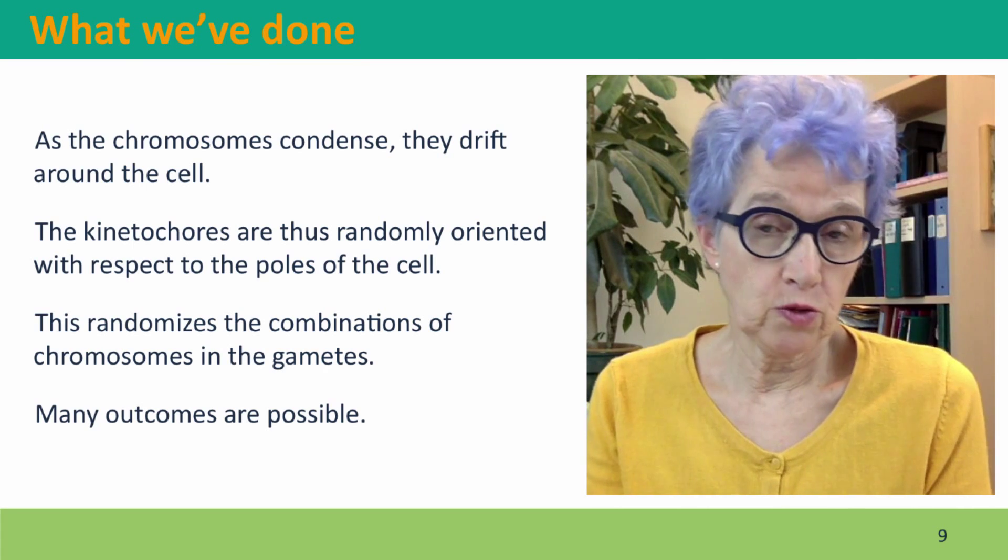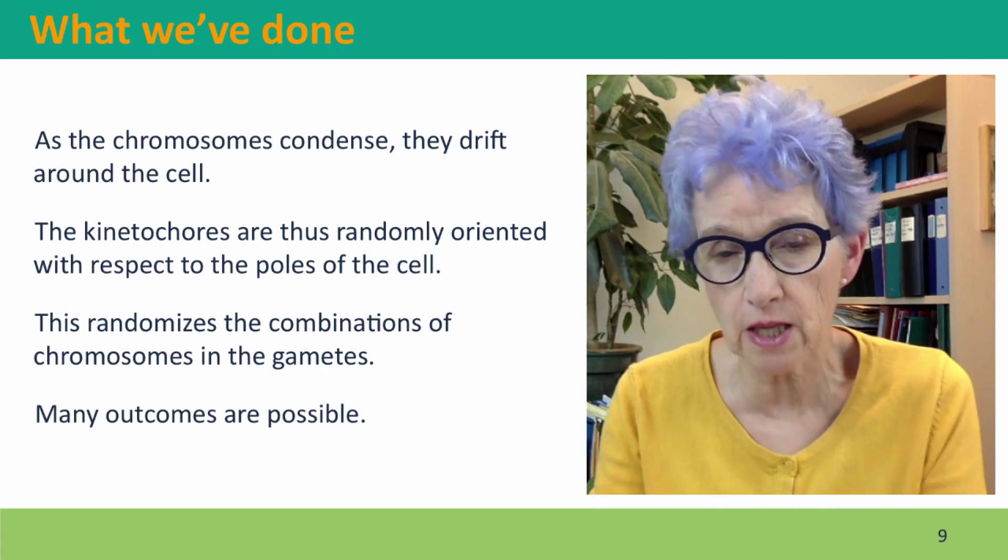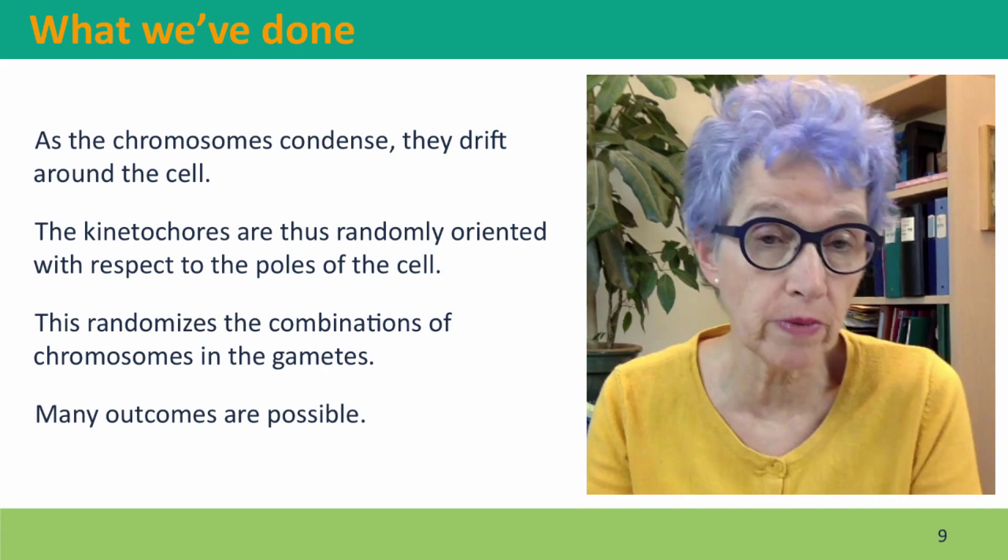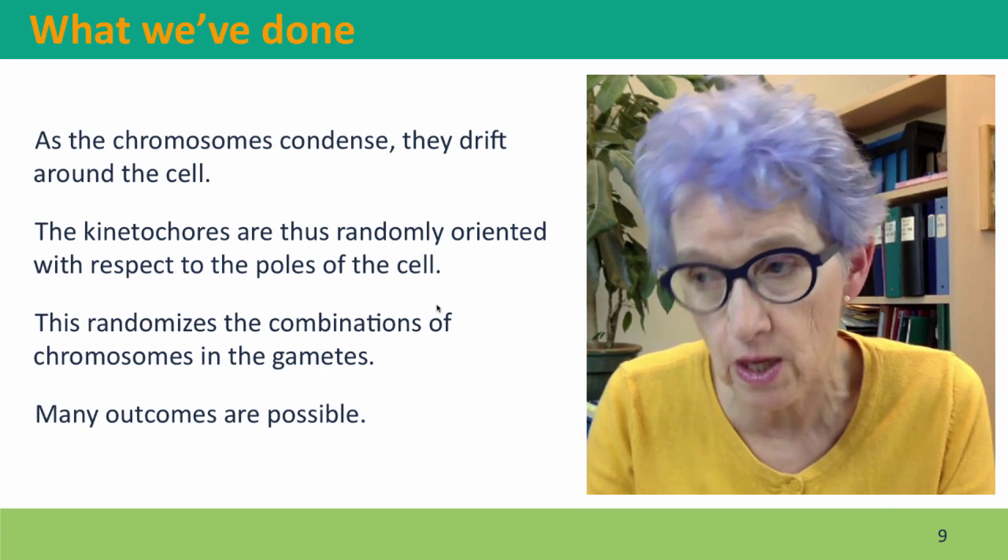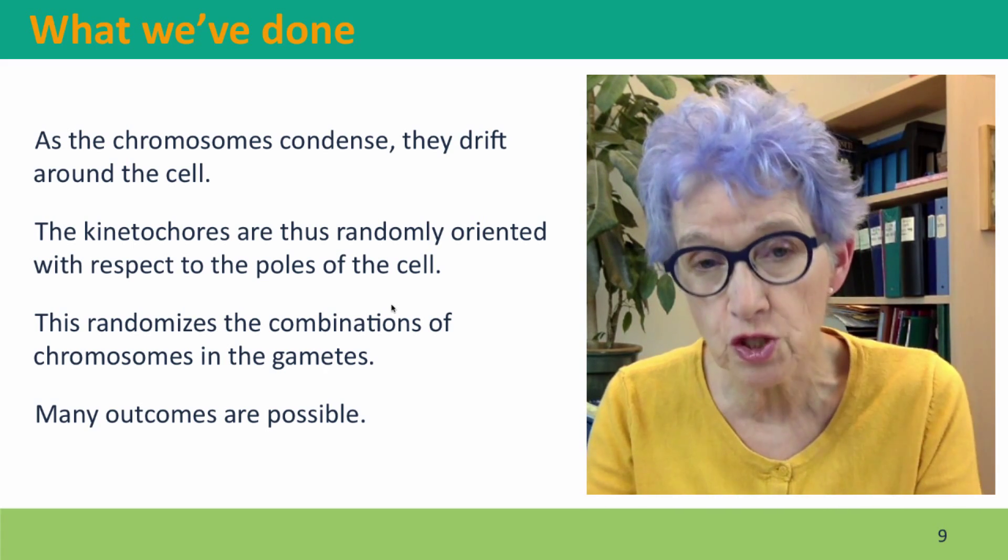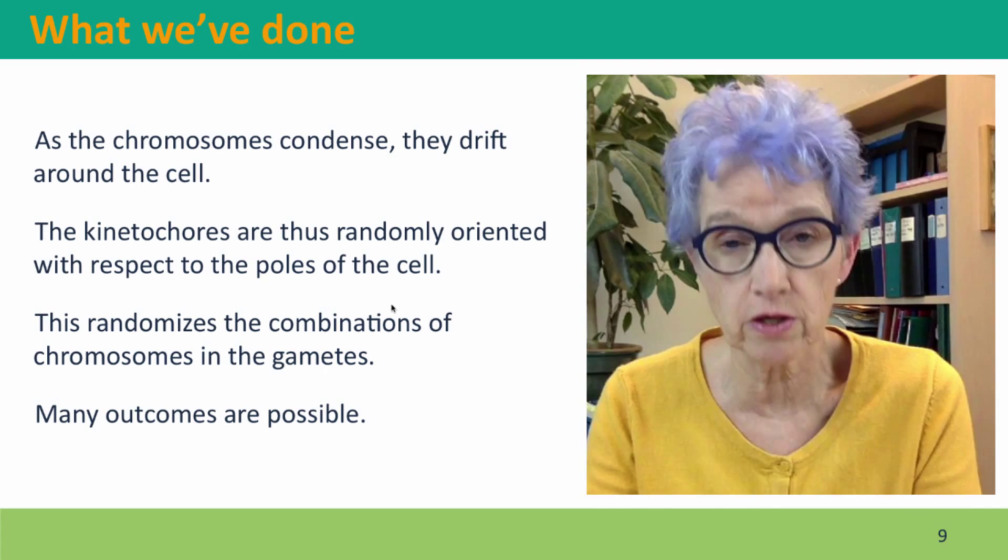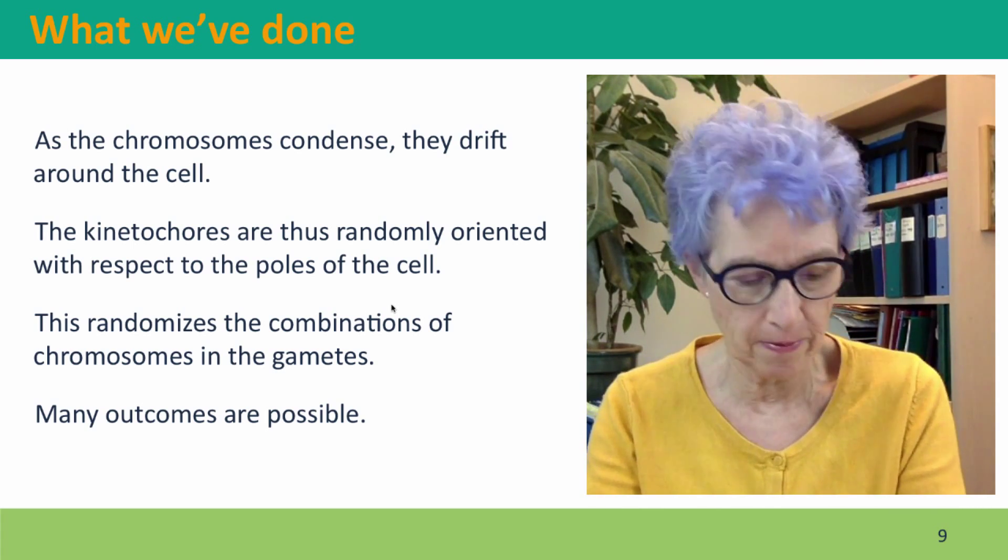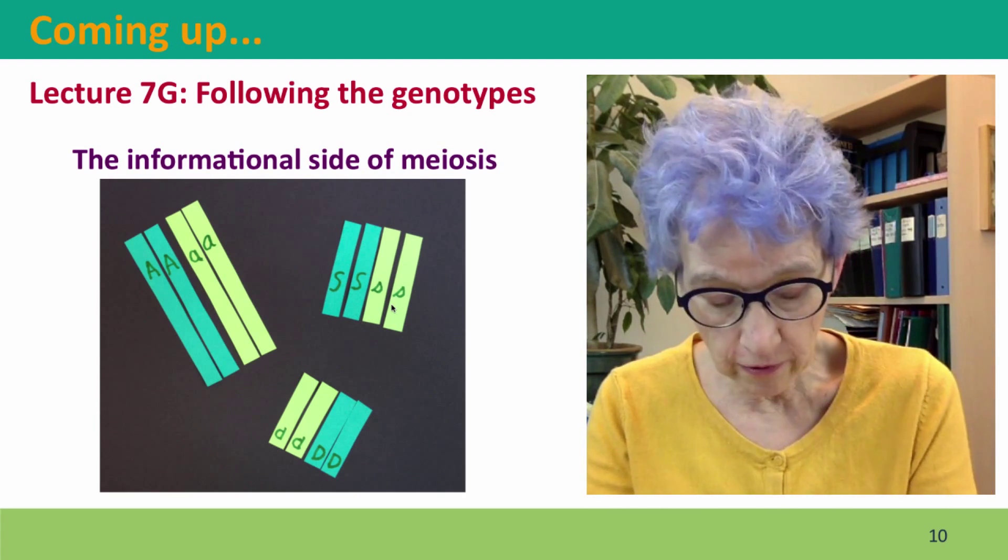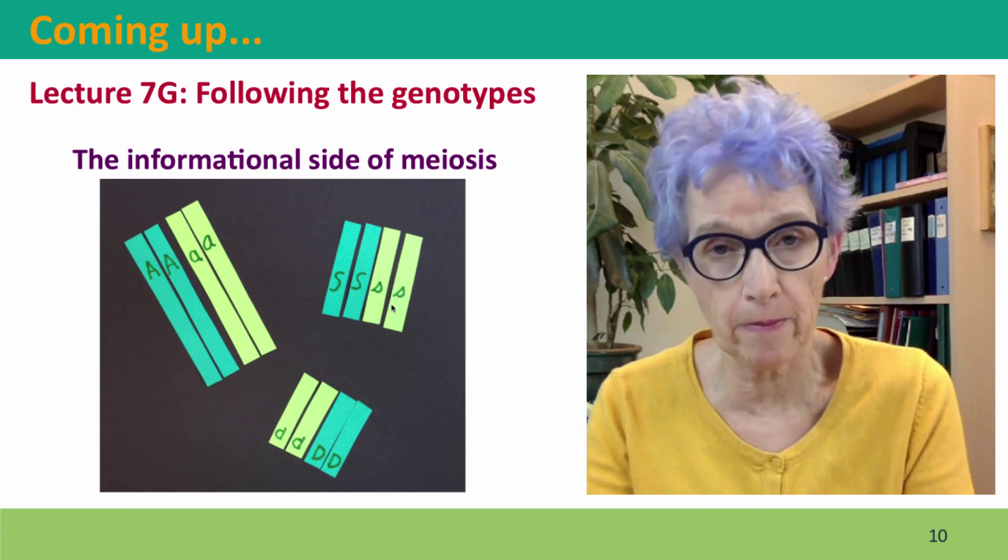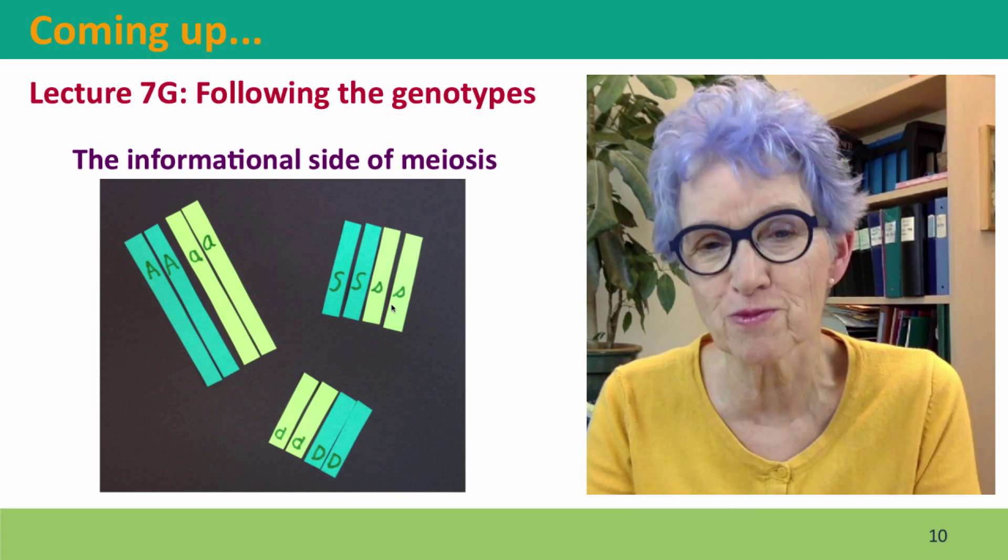So what we've done is we've considered the chromosomes as moving in the three-dimensional space that is the cell. And this movement explains how it is that they come to be randomly positioned with respect to the directions that they're being pulled by the spindle fibers. And thus that the gametes that are produced contain random combinations of the chromosomes that the parent cell inherited in the gametes that formed it. Coming up next, we're going to do a series of problems where instead of focusing on the physical movements that happen in meiosis, we're going to follow the genotypes of alleles on the chromosomes. I hope to see you there.